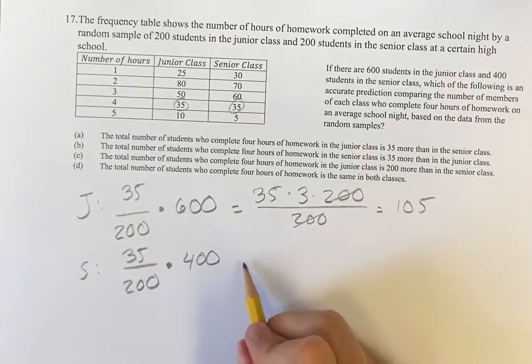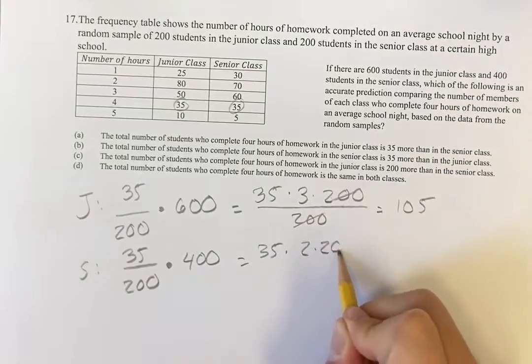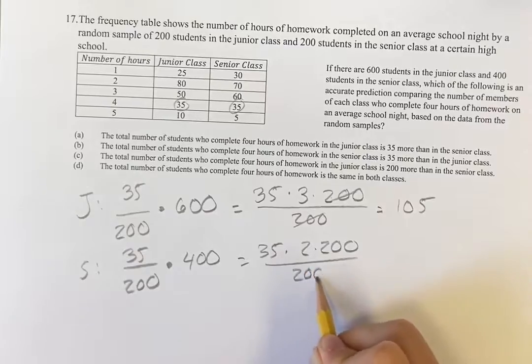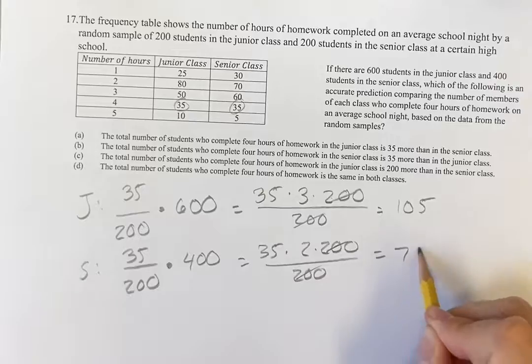Similar thing here, 400 is equal to 2 times 200, divided by 200 again. These cancel out, we're left with 35 times 2 is equal to 70.